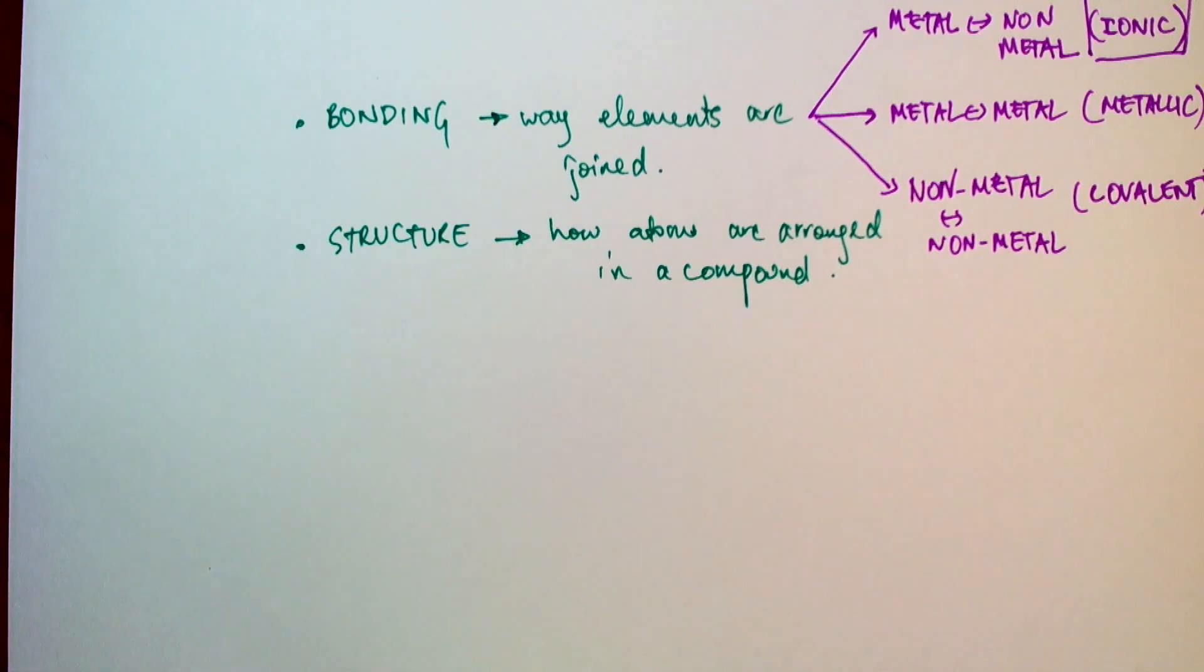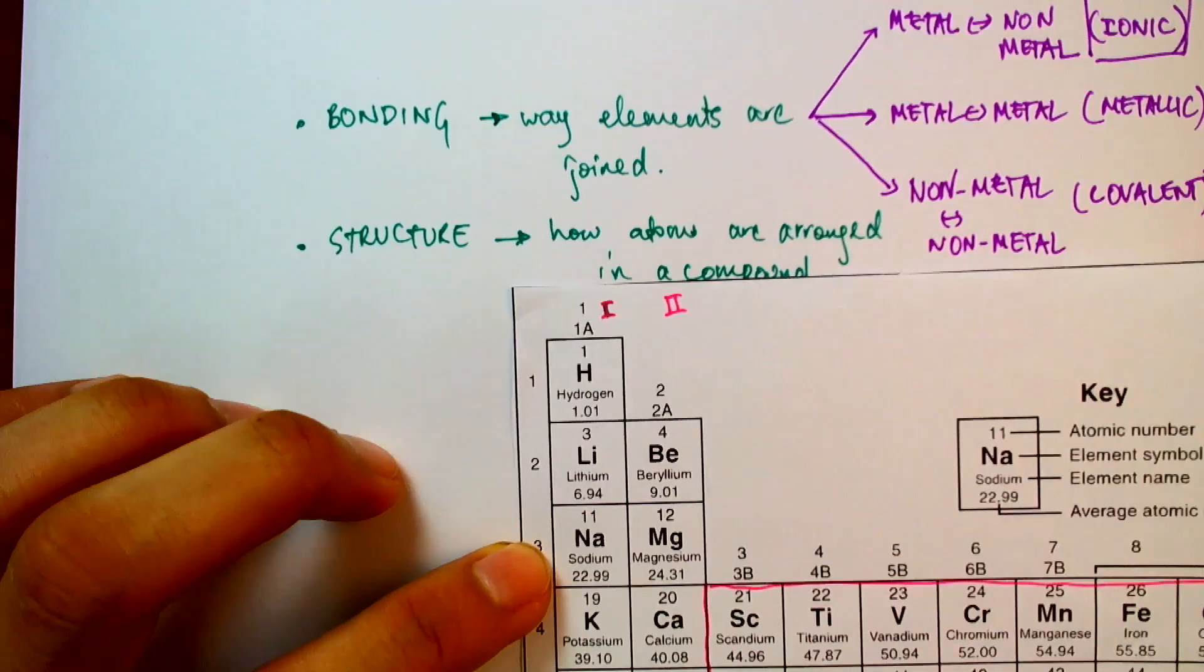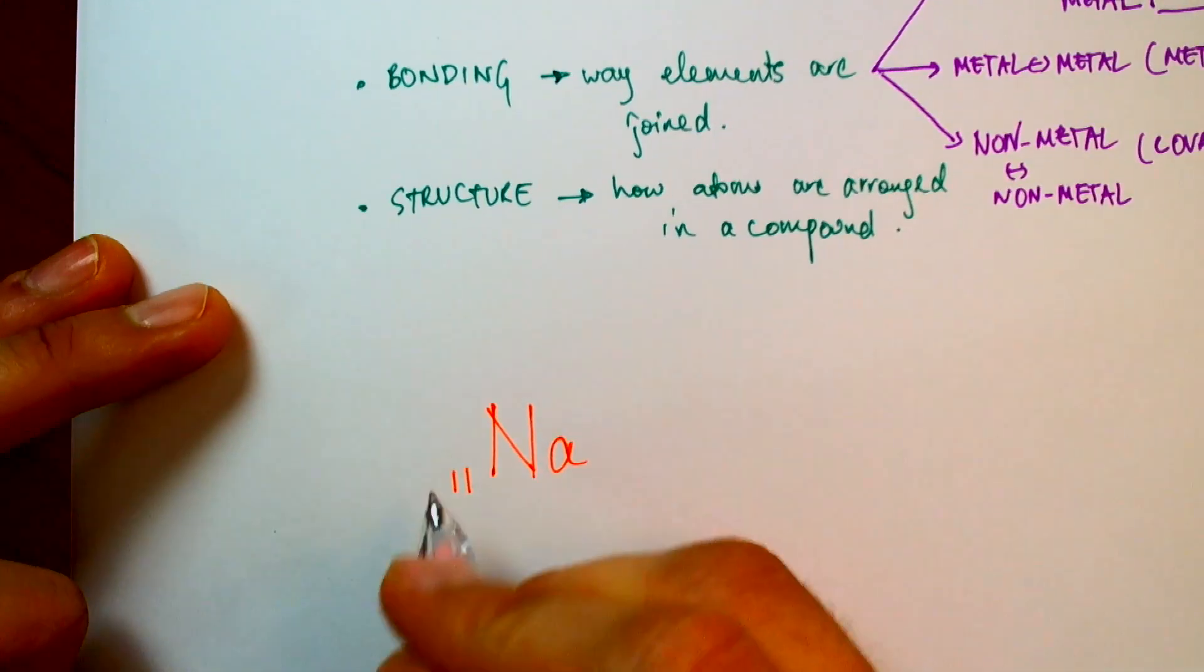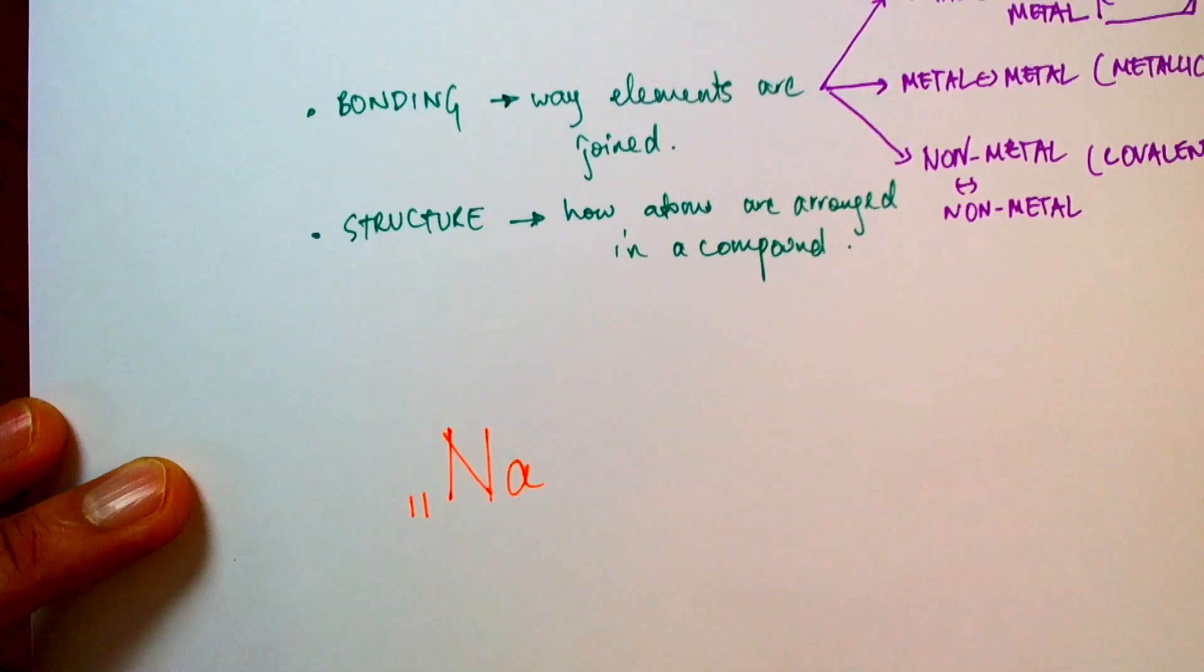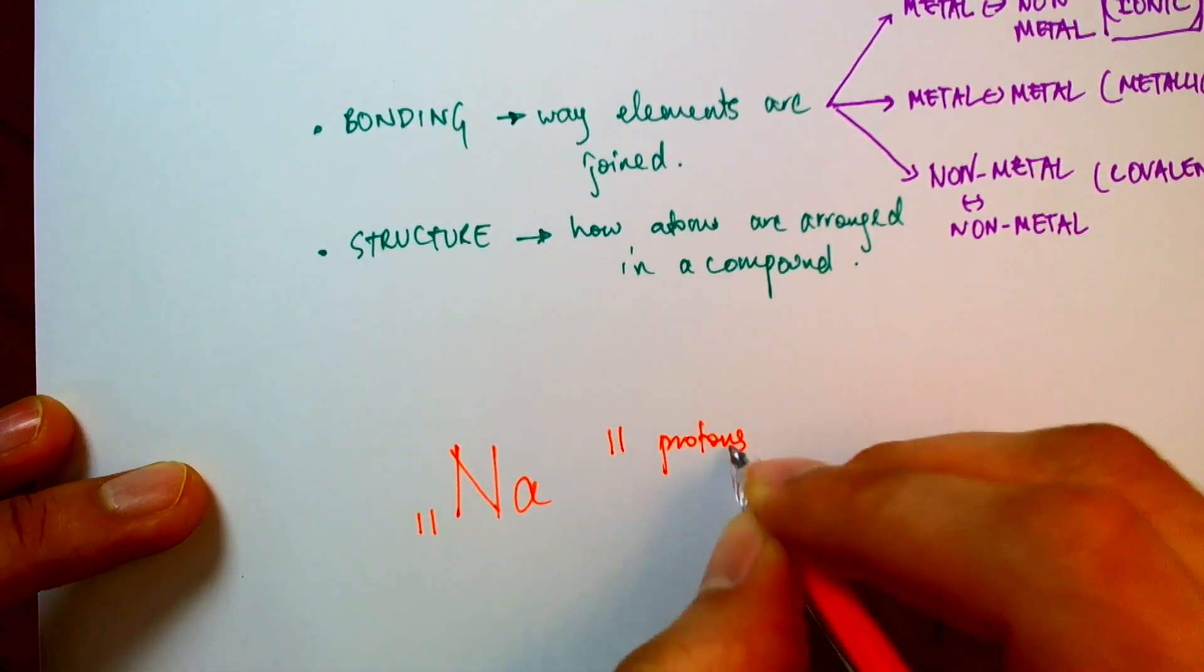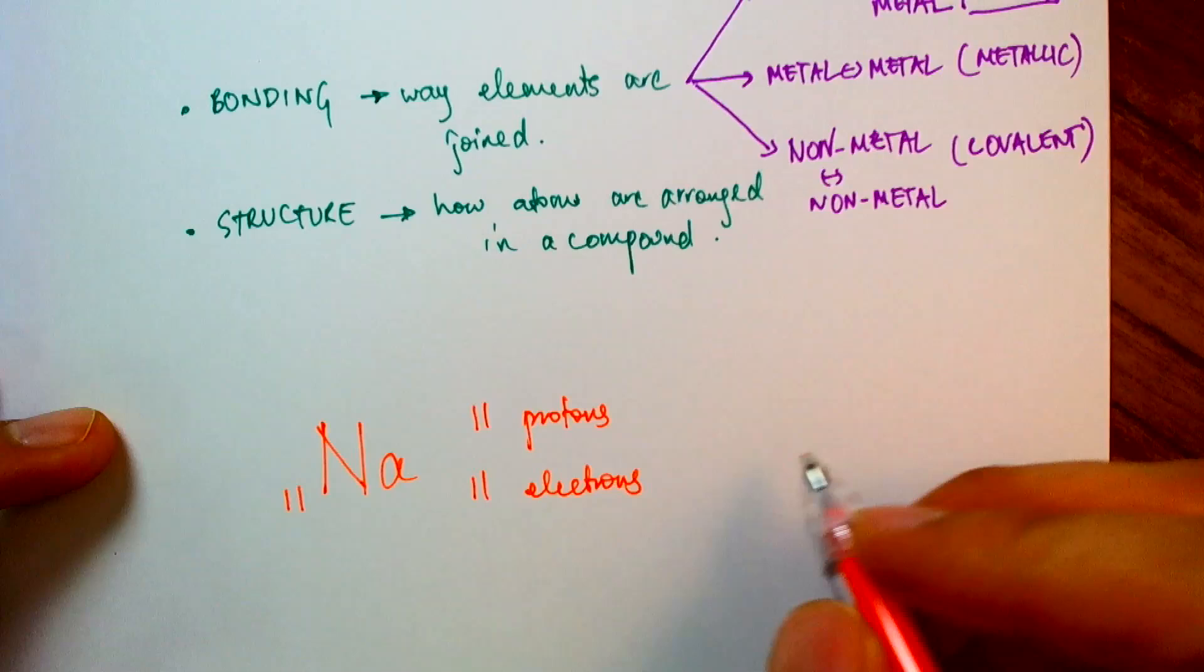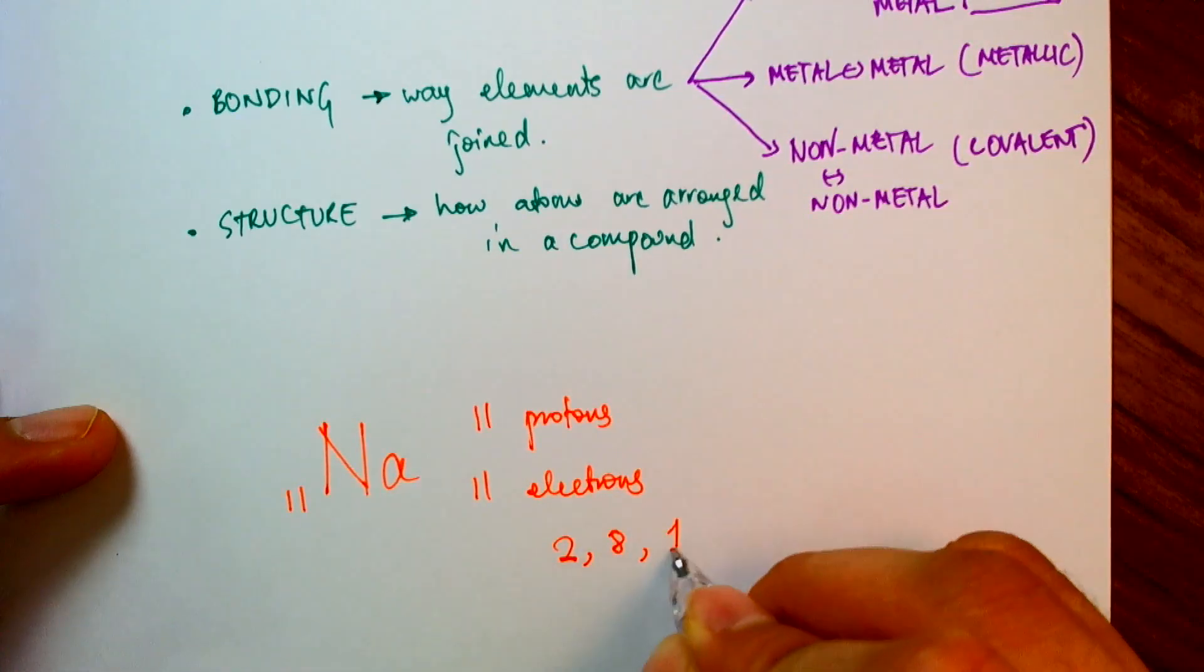So let's take a look, for example, at sodium. Sodium is element number 11. So my periodic table tells me sodium is element number 11. So we will not worry about the mass number for the moment, because we're interested in electrons. So sodium has 11 protons and 11 electrons. So it has an electronic configuration of 2, 8, 1.